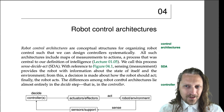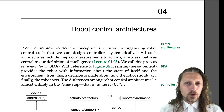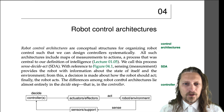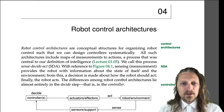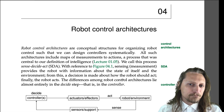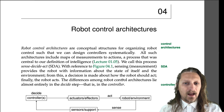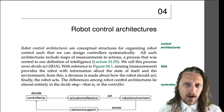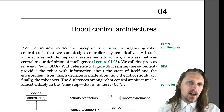Hello. Lecture 4.0, if you will, the introduction to the chapter Robot Control Architectures. Robot Control Architectures are conceptual structures for organizing robot control such that we can design controllers systematically. All such architectures include maps of measurements to actions, a process that was central to our definition of intelligence in Lecture 1.5. We call this process Sense-Decide-Act, or SDA for short.